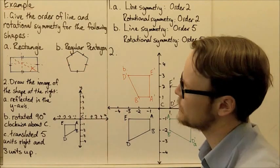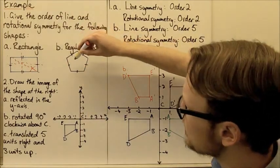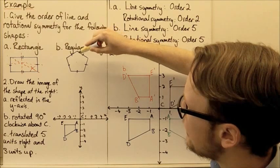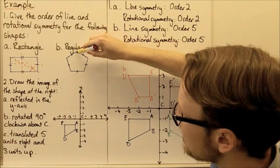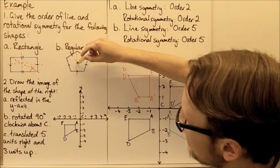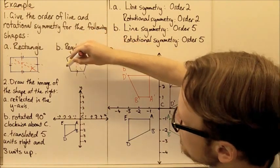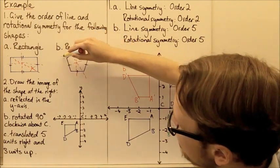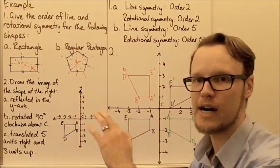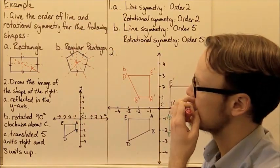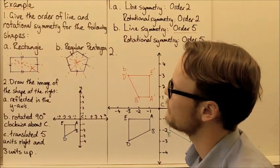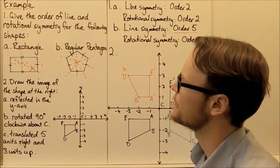For our regular pentagon, we've got the centre and we can see how we can split it to mirror. We can mirror it through five different axes. There are five different lines of symmetry possible. So the order of line symmetry for our regular pentagon is five.